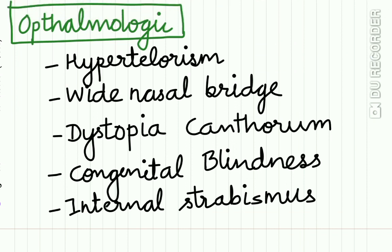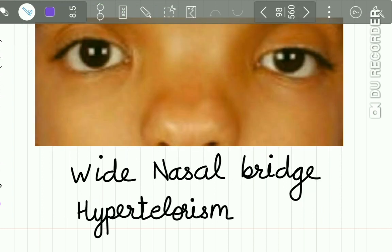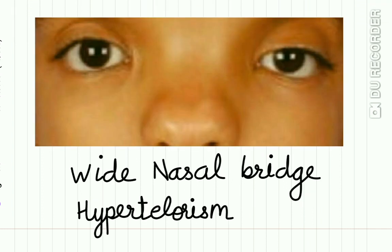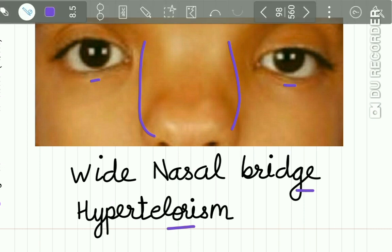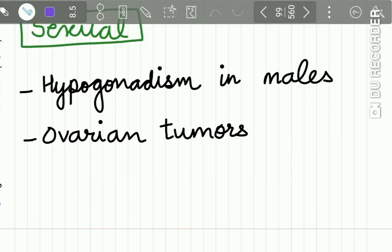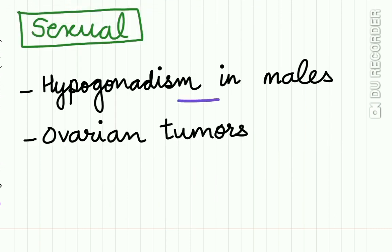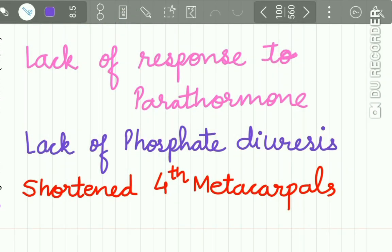Ophthalmologic manifestations include hypertelorism, wide nasal bridge, dystopia canthorum, congenital blindness, and internal strabismus. This picture shows a patient with a very wide nasal bridge and hypertelorism. Sexual abnormalities include hypogonadism in males and ovarian tumors in females.